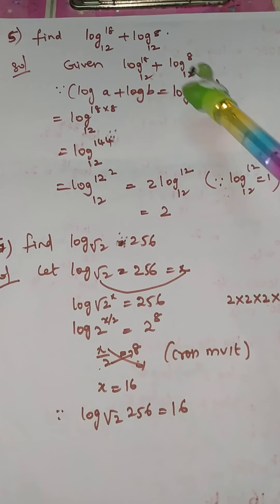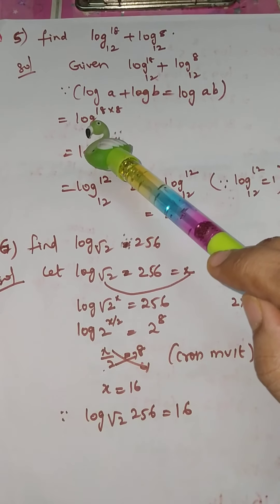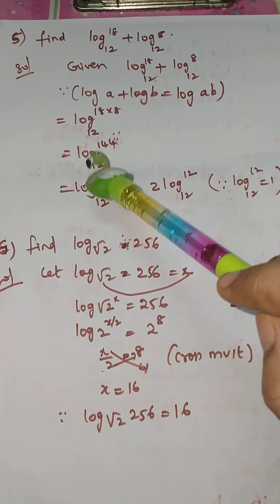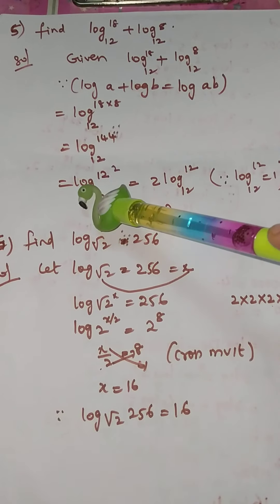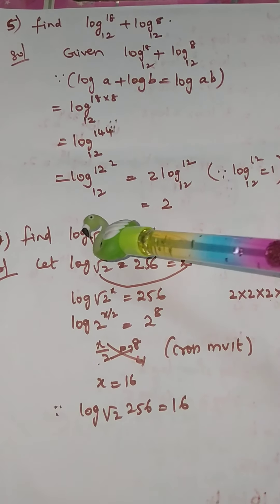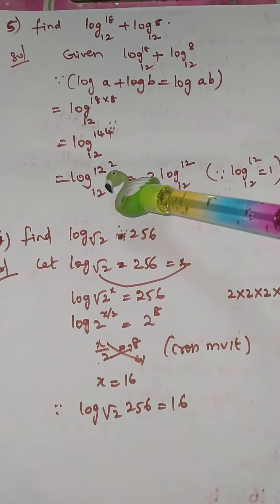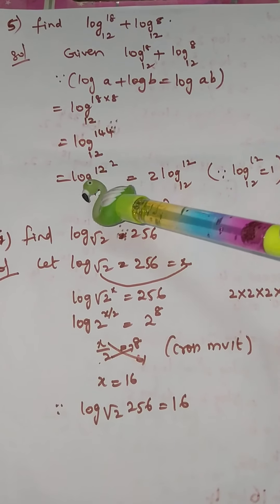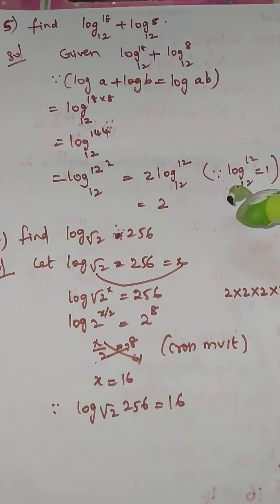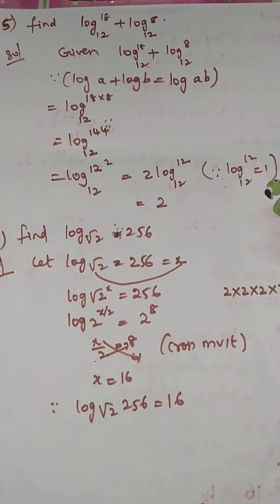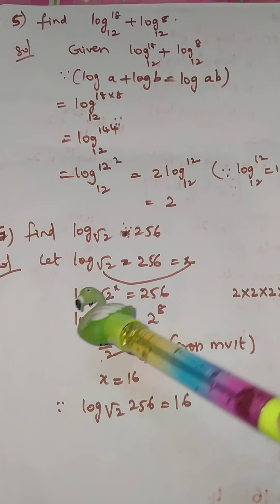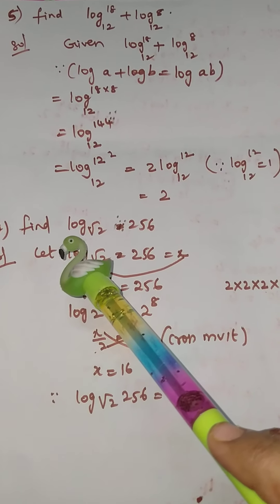Here a is 18 and b is 8, so we take log₁₂(18 × 8) = log₁₂(144). We can write 144 as 12 squared, so this becomes 2·log₁₂(12). Since log₁₂(12) = 1, the answer is 2.